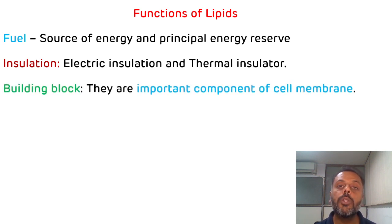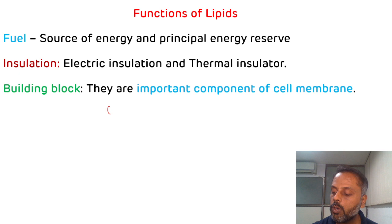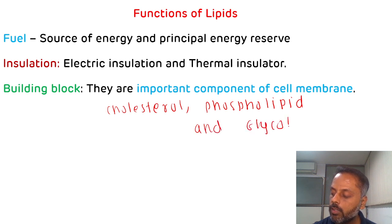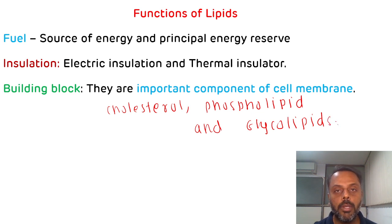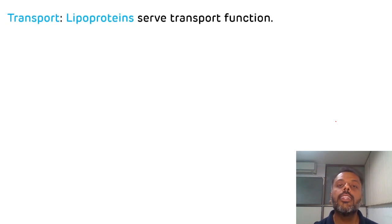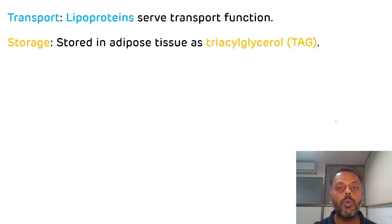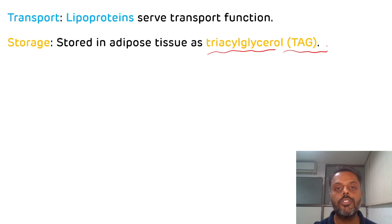Another important function is related to the building block role. Lipids are important components of the cell membrane — examples are cholesterol, phospholipid, and glycolipid. All these lipids play an important role in cell membrane synthesis. They also serve a transport function; the example is lipoprotein. They also have a storage function — they are stored in the adipose tissue in the form of triacylglycerol.